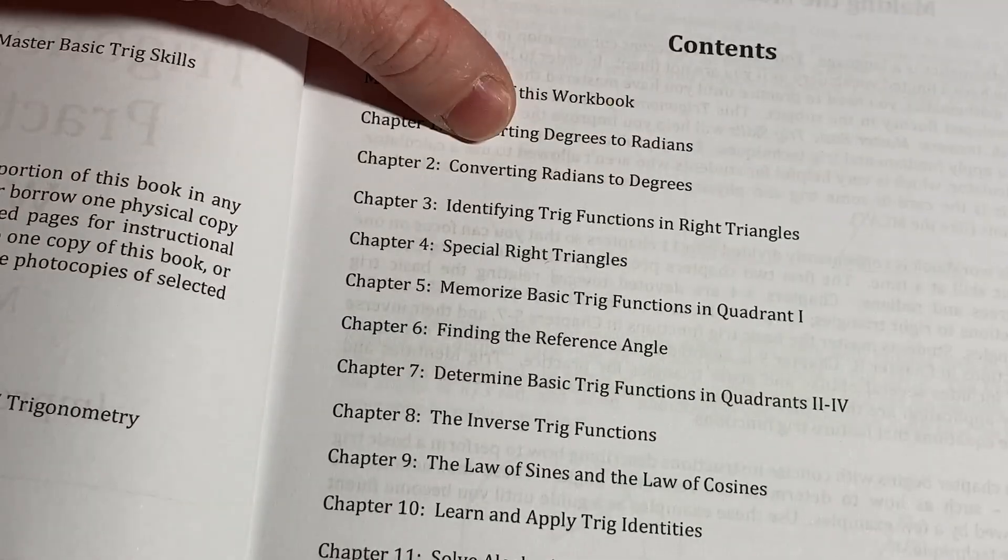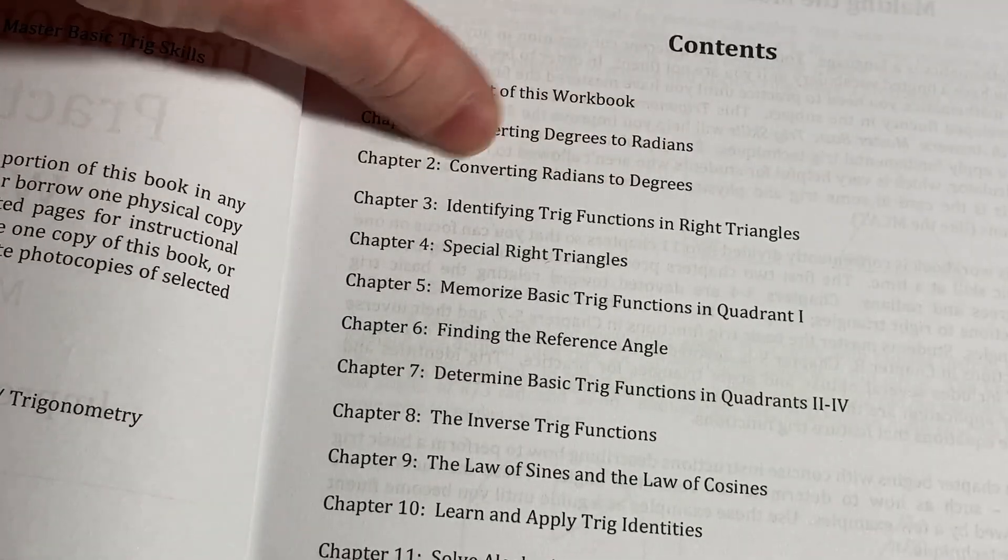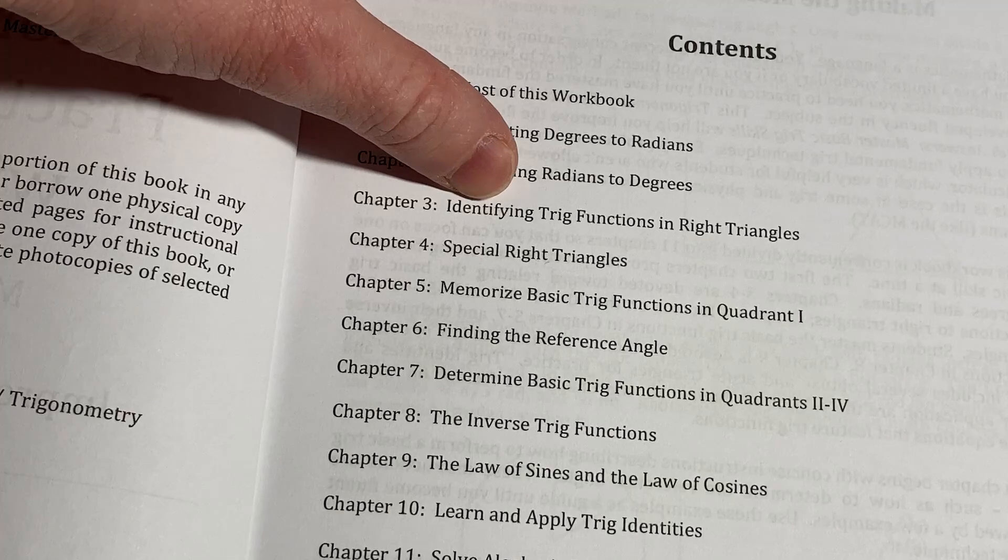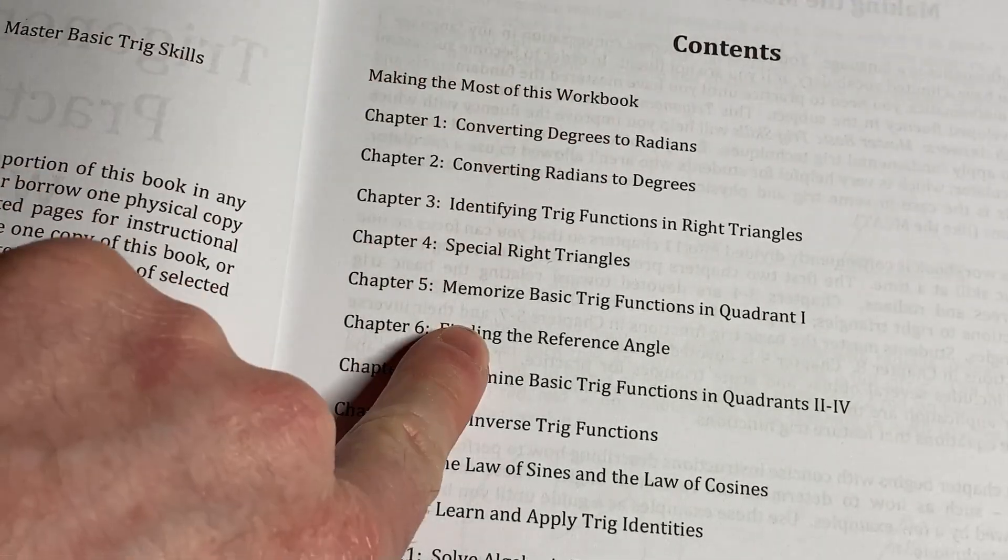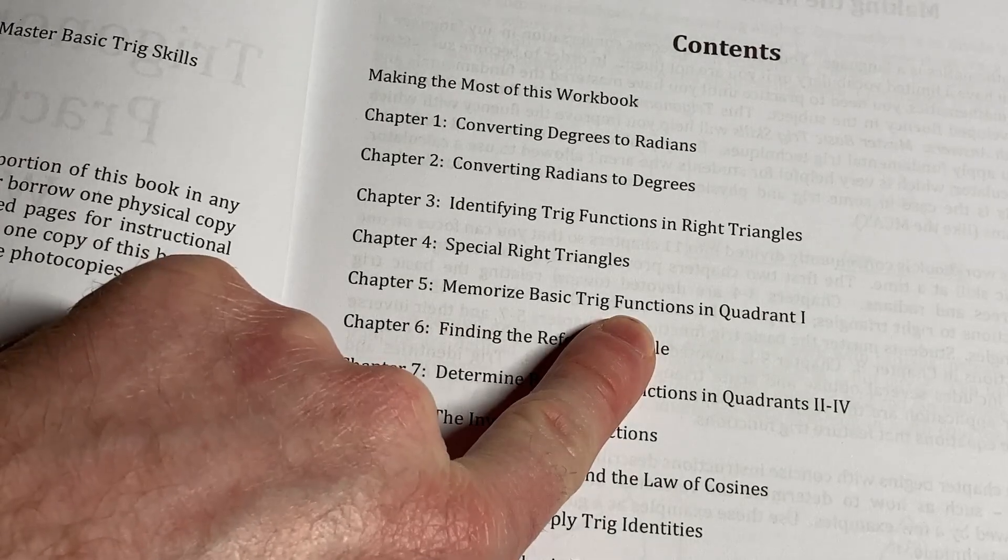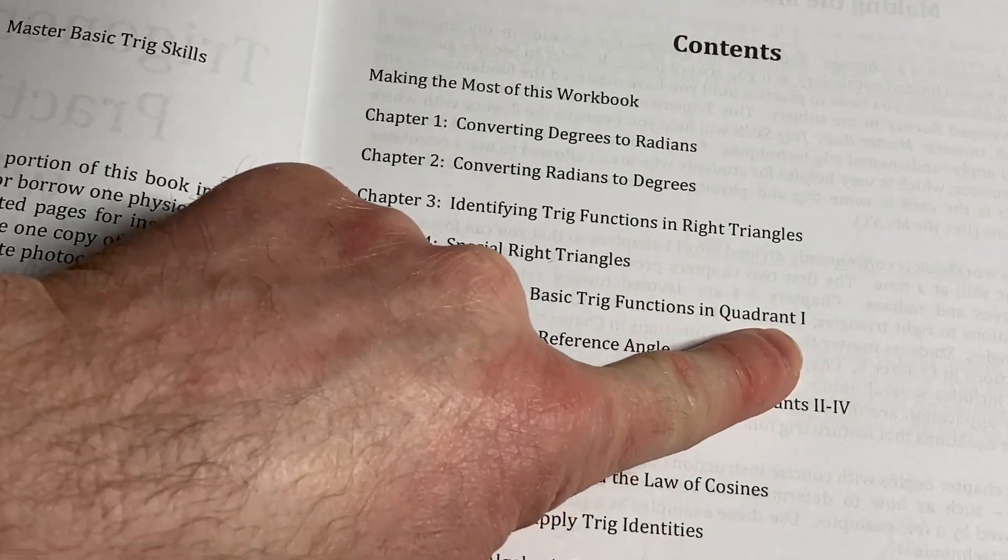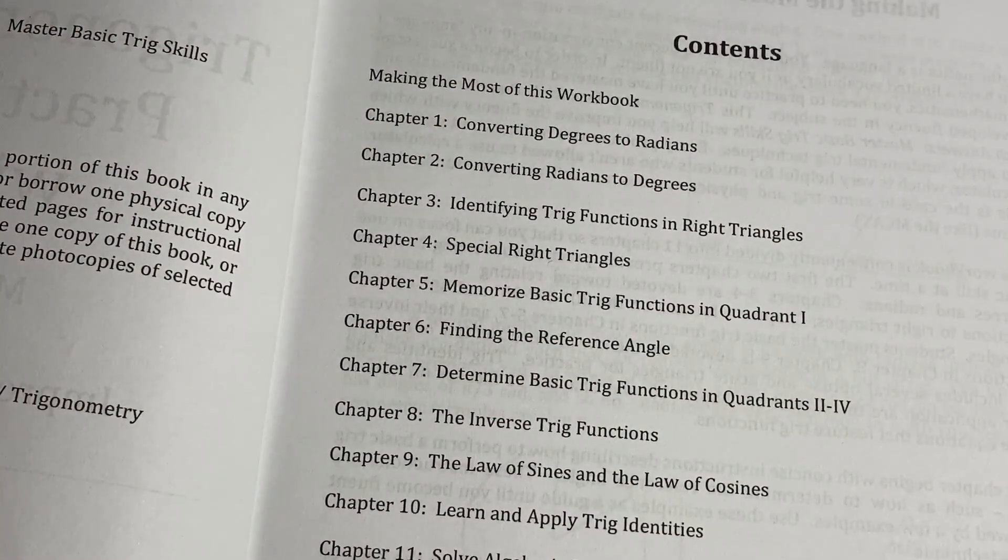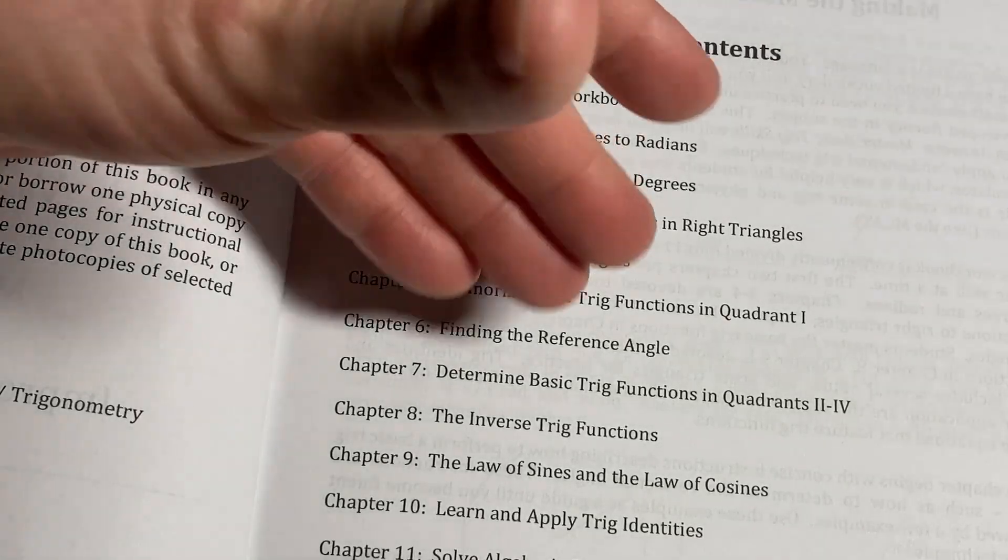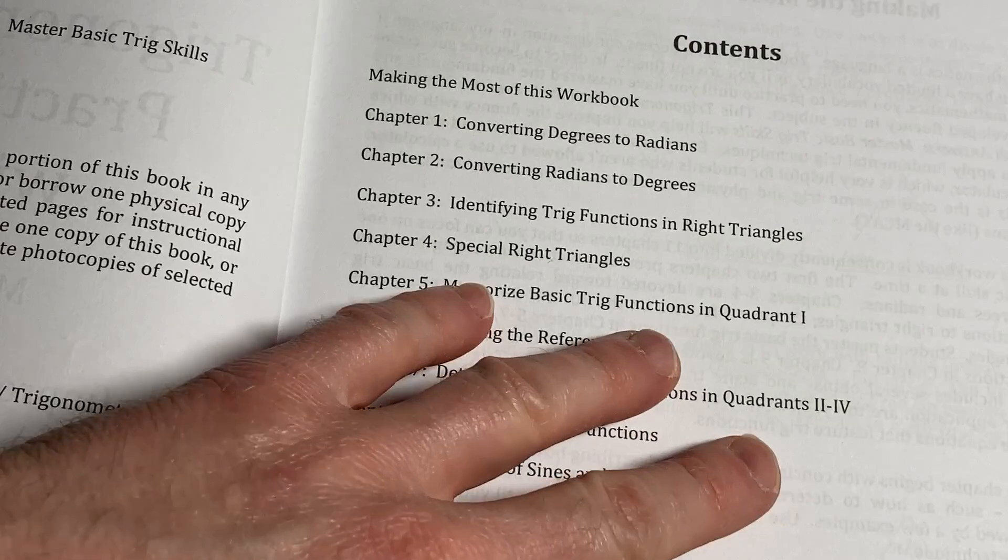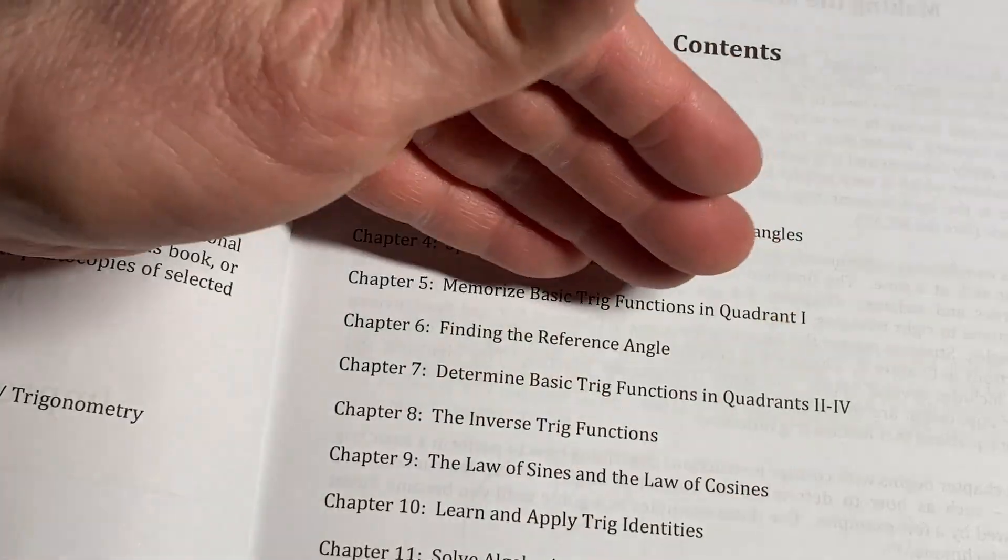Converting degrees to radians. Converting radians to degrees. Very, very easy stuff. Identifying trig functions in right triangles. Special right triangles. Memorize basic trig functions in quadrant 1. Yes, that is something that you definitely want to do. Whatever works, whatever you need to do, memorize it. Different people have different ways of thinking, so just do whatever you think is right for you and memorize them.